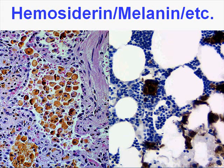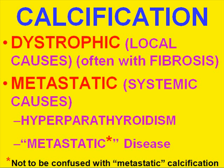Calcification is classically divided into dystrophic and metastatic. Dystrophic calcification refers to calcification within an area, usually the result of injured, inflamed, or abnormal tissue, where all the influences causing calcification are local — often seen with fibrosis or long-term damage. Metastatic calcification, which is not the same as metastatic disease, is calcification within tissues due to hypercalcemia, perhaps from hyperparathyroidism or metastatic disease causing hypercalcemia, resulting in calcifications in various places.